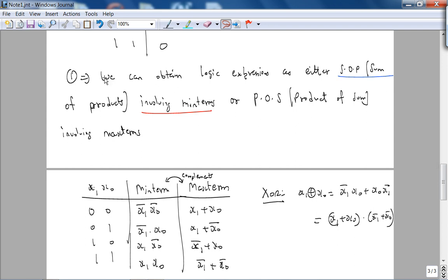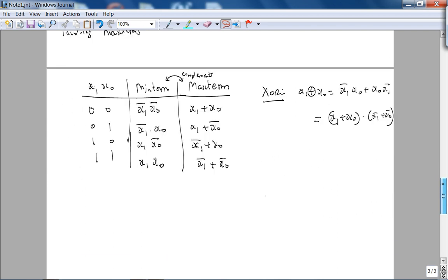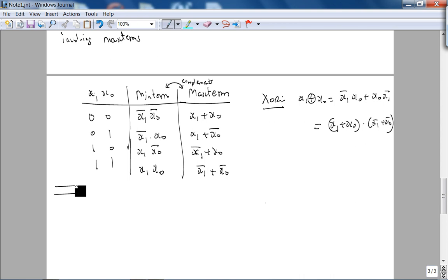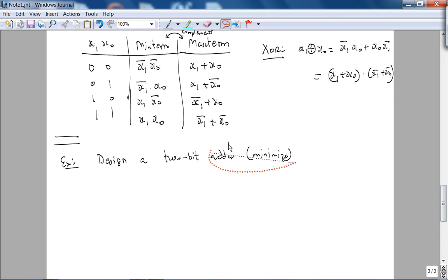So the goal is, we basically, you either use sum of products or product of sums. Which to use, it all depends on the logic function and the minimization. So let's look at an example and we won't have time to cover this in this video, but we'll do this in the next lecture video. So in the sense, let's look at a more esoteric example. So let's design a 2-bit adder and then we'll minimize this later.